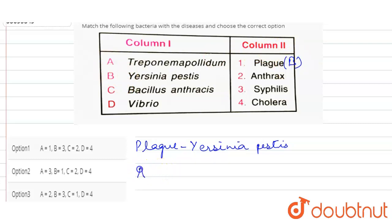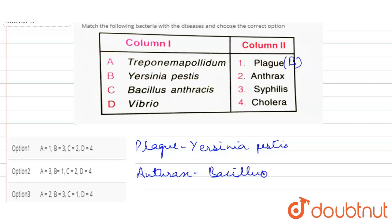Next, what is anthrax? Anthrax is a rare but serious illness which is caused by spore-forming bacteria called Bacillus anthracis. It affects livestock and wild game. So the correct option is 2.